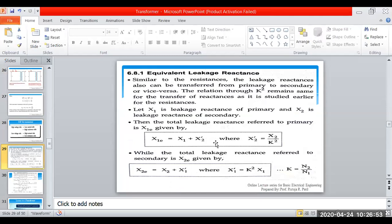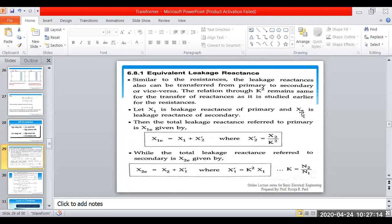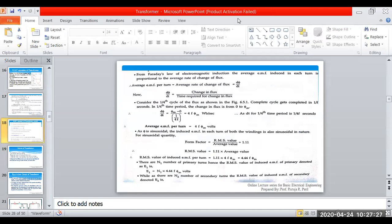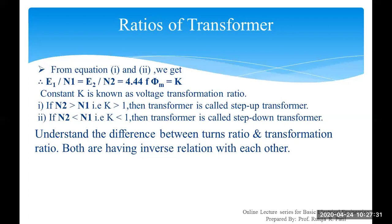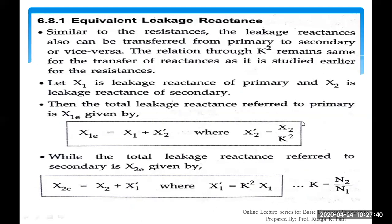If you are transferring primary leakage reactance X1 to the secondary side, its equivalent will be X1 dash. If secondary leakage reactance X2 is transferred to the primary side, its equivalent X2 dash is obtained by multiplying by K². By using this you can solve the numericals.